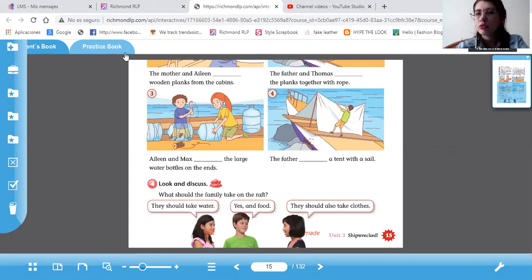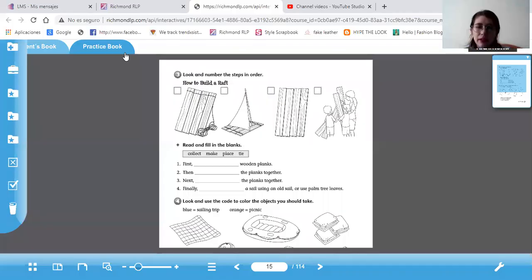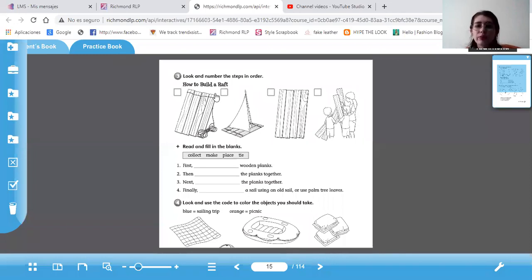Vamos a ir a su practice book en su página 15. En esta página van a enumerar los pasos. How to build a raft. Cómo construir una balsa. De acuerdo a lo que leímos en nuestra página de color. Y vamos a leer y completar los espacios con estos verbos. Collect, make, place y tie. Lo van a escribir aquí de acuerdo a los pasos a seguir para la balsa.